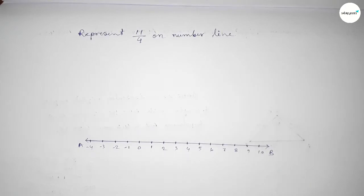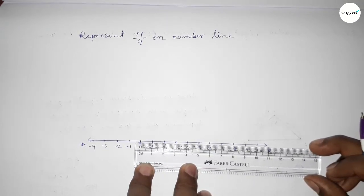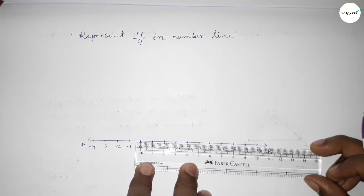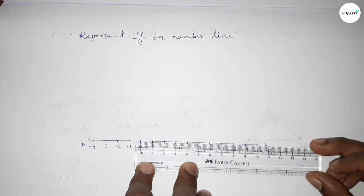Now we have to divide the distance between any two numbers into four equal parts. So first dividing the distance into two parts, then into four equal parts. First dividing the distance between 0 to 1.